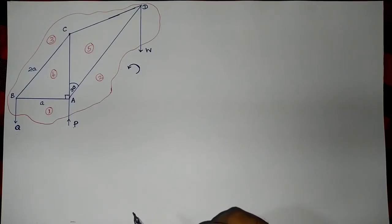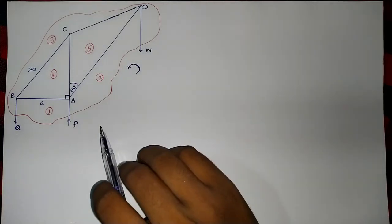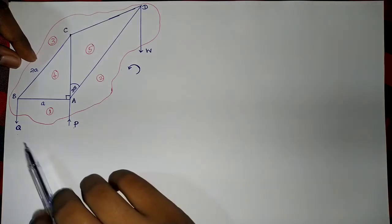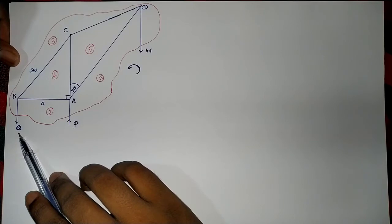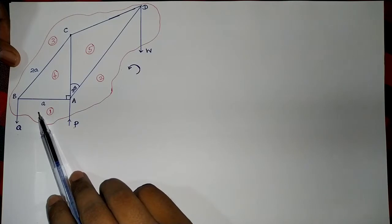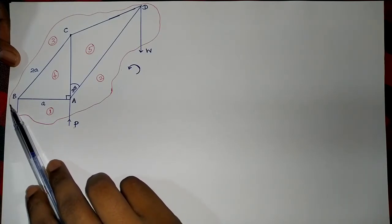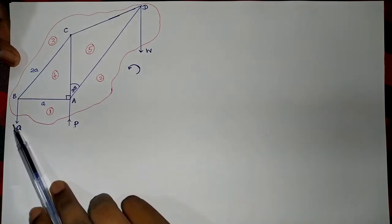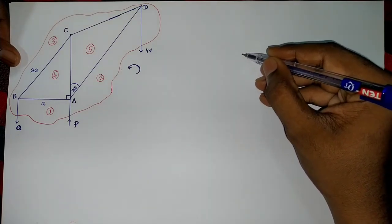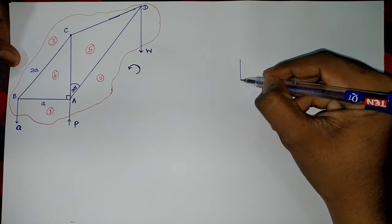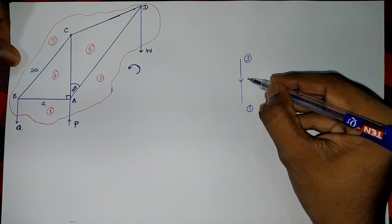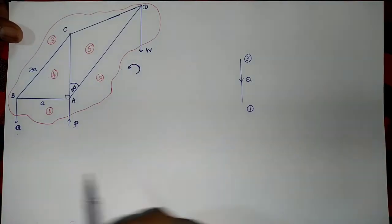Now I can start drawing the stress diagram. First I am going to move between two regions where the direction of the force is known — that is force Q. Since I have selected the anticlockwise rotating direction, I want to move from region three to region one. When shifting from three to one, the force is directed downwards, so it is represented as a downward arrow from three to one. That is Q.